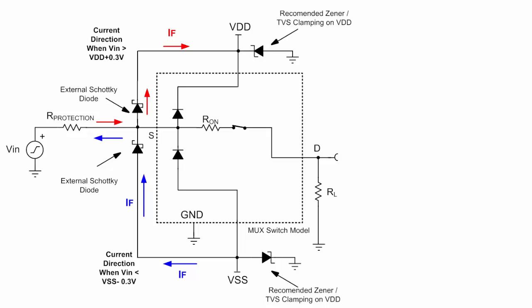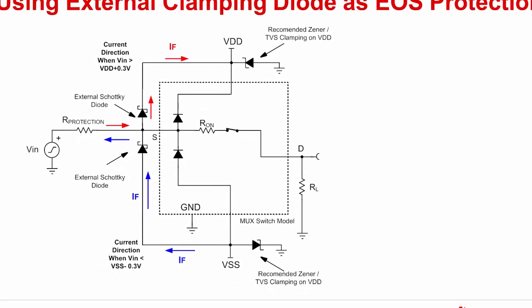These Schottky diodes also have a higher current carrying capacity compared to the internal ESD diodes. A series resistor limits the current flowing through the Schottky diodes. It is also recommended to include a Zener or TVS clamp at VDD and VSS to clamp the maximum supply voltage within datasheet specifications, as many LDO power supplies are not capable of sinking current. An overvoltage input signal could be directed through the ESD diodes to the supply, and including the TVS diode on the supply prevents input overstress from becoming an overstress problem on the supply.